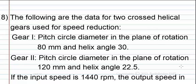The following are the data for two crossed helical gears used for speed reduction. Gear 1: Pitch circle diameter in the plane of rotation is 80 mm and helix angle is 30 degrees.